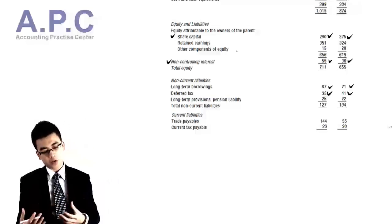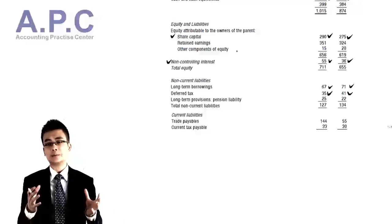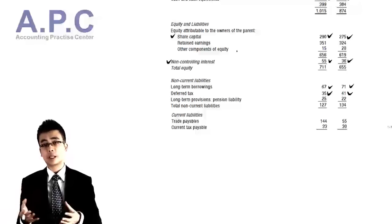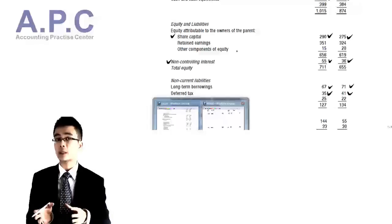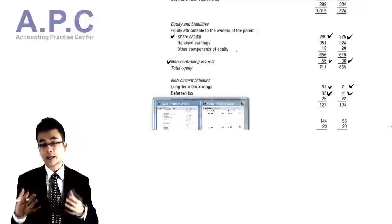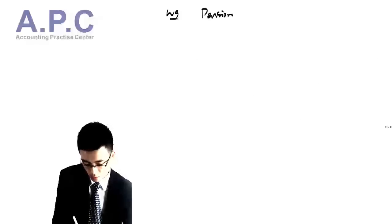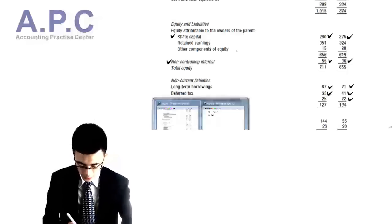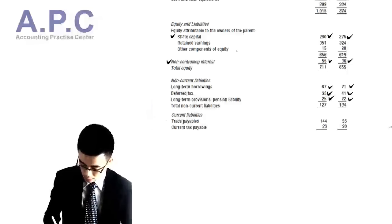We've got long-term provisions for pension liabilities. For the pension liability — related to our defined benefit scheme — the only cash flow under IAS 19 would be the contribution. We need to show that movement in working number 9 for pensions. The opening balance is 22 and the closing balance is 25.